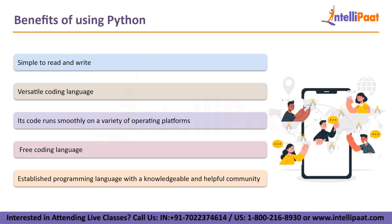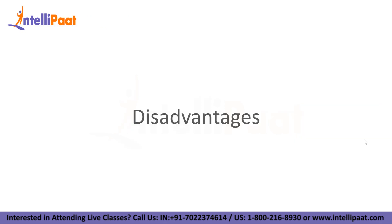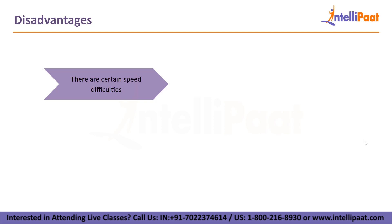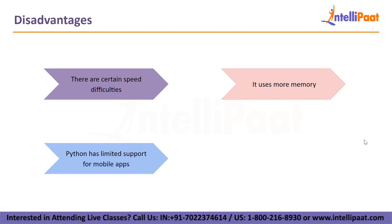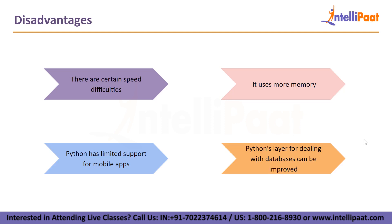Databases, browsers, threads, documentation, CGI, and robotic app testing are all supported by Python's broad library. Now let's move on to the disadvantages. Although Python is quick to script applications, when compared to other languages such as C++, JavaScript, and Java, there are certain speed difficulties, especially when developers compile code for large projects. Because it uses more memory, it may not be a good choice for programmers with restricted capacity. Unfortunately, Python has limited support for mobile apps — it lacks the functionality required to develop mobile applications and is not suitable for mobile computing. Python's layer for dealing with databases can also be improved.